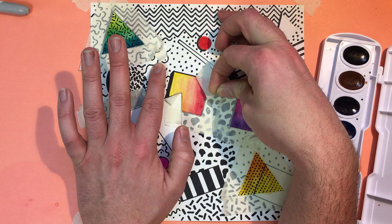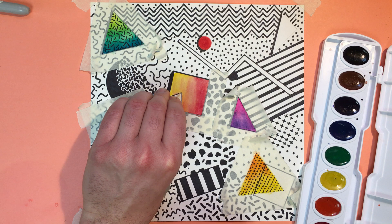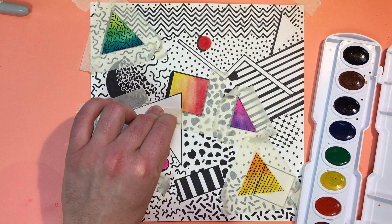Peeling off the tape very slowly and you'll see that you have these nice protected crisp edge lines because of the protection of your tape.